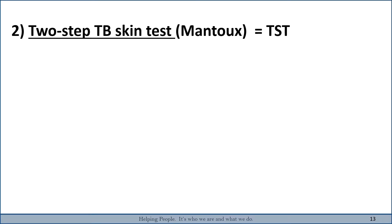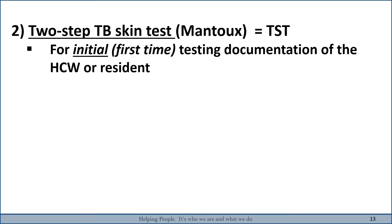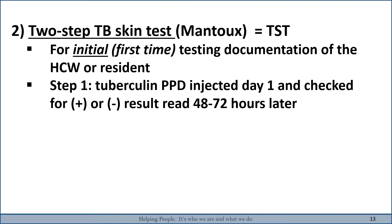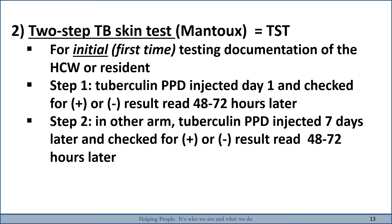The two-step TB skin test is used for the initial first-time testing of a healthcare worker or resident. Step one: the TB PPD is injected on day one and checked for a positive or negative result, read 48 to 72 hours later. Then, seven days later, the healthcare worker or resident returns and is injected in the other arm, and then checked for a positive or negative result 48 to 72 hours after that.